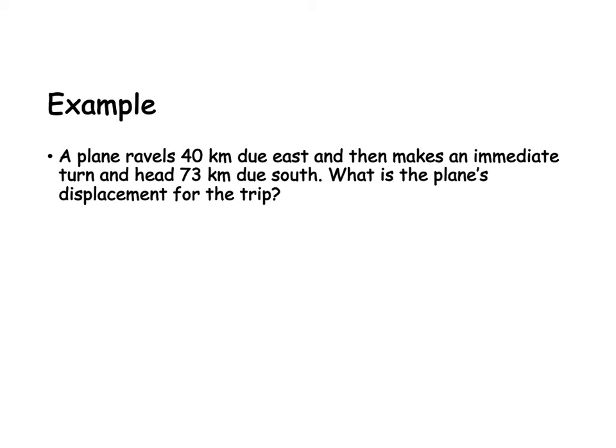Alright, so let's look at an example. In this one, we have somebody traveling 40 kilometers due east and then 73 due south, and it wants to know the displacement. So we have 40 east, and then it goes 73 south. So that arrow should be way bigger. I kind of didn't make the other one small enough, but you guys get the idea.